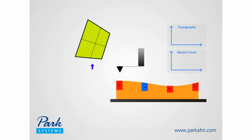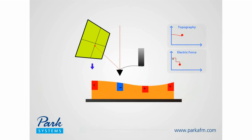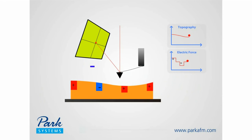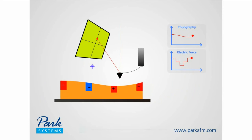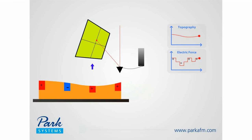In this electrostatic domain, the attractive and repulsive deflections of the cantilever correspond to regions of positive and negative charge on a sample surface. EFM gives users an image that couples topography with the electrical properties of a nanoscale region.